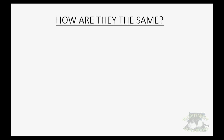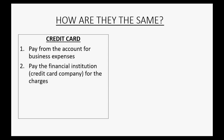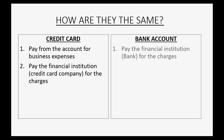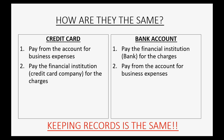How exactly are credit cards and bank accounts the same? With a credit card you would pay from the account for business expenses first, then after you charge the card you would pay your money to the financial institution for the charges. A bank account is exactly the same but in reverse — first you pay the financial institution your own money, then you pay from the bank account for business expenses. Keeping records of these two are exactly the same transactions happening in a slightly different order.